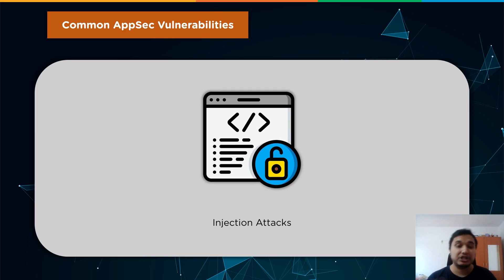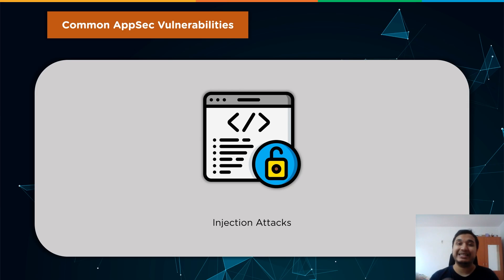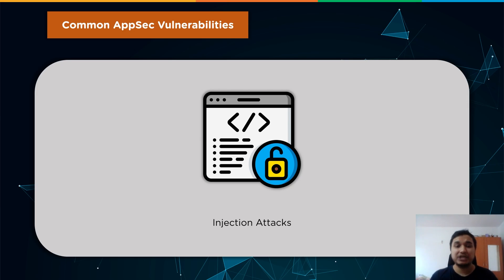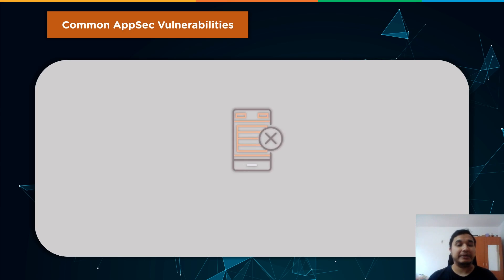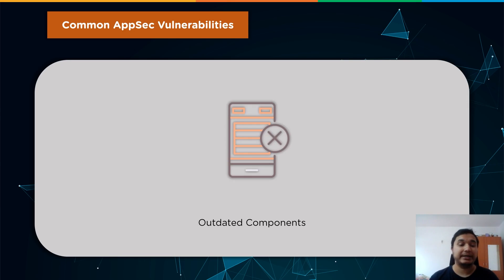Second are injection attacks. Threat actors can use injection vulnerabilities to convey malicious information to a web application interpreter. It has the potential to assemble and execute this data on the server. SQL injection is a popular type of injection attack, which was covered in the introduction of this video.